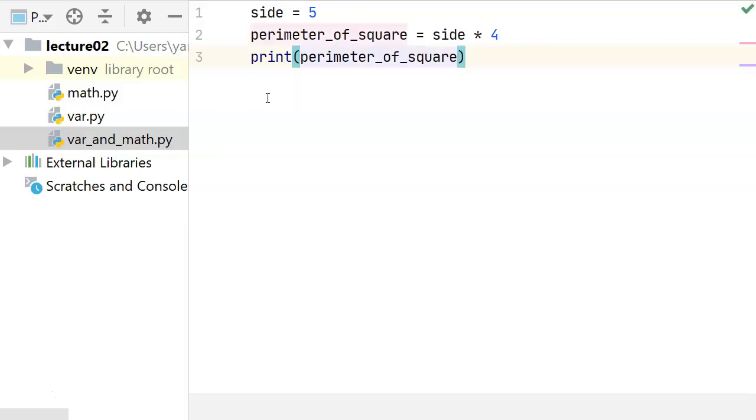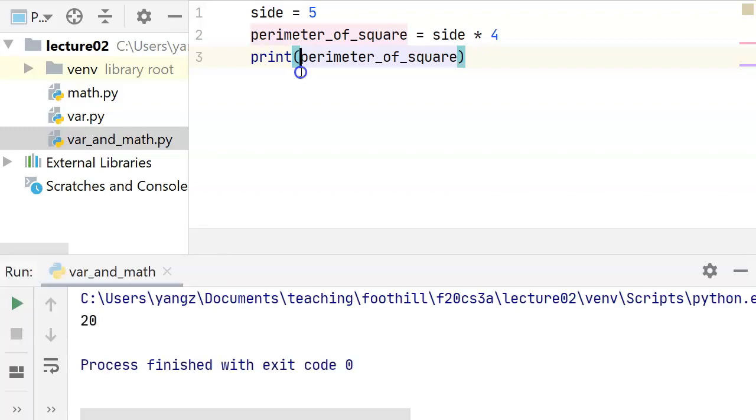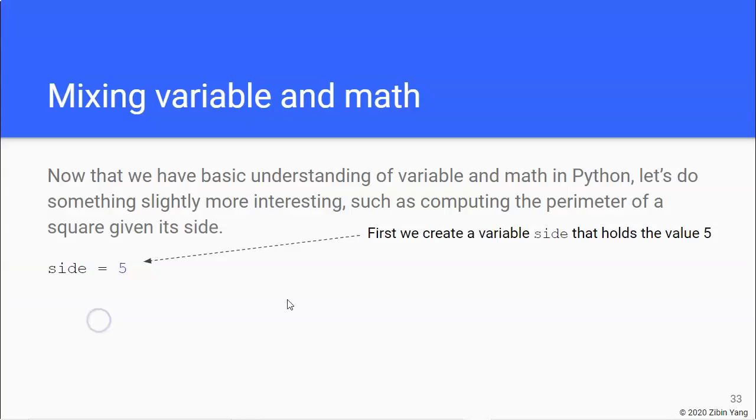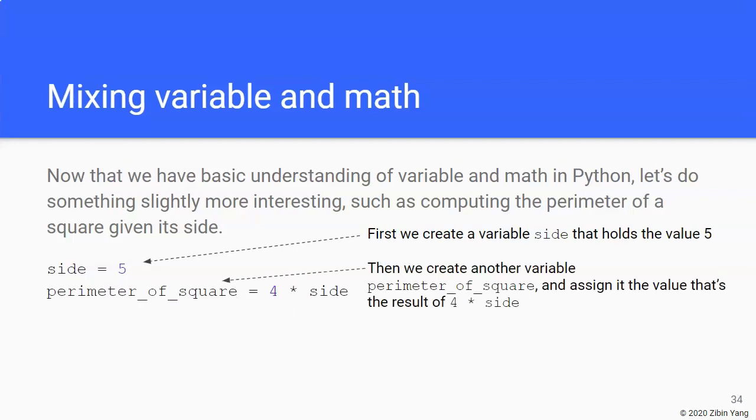And then finally I want to see what the result is, so I'm going to print out perimeter_of_square. And if I run this, hopefully I've done everything right, then we are going to see the result of 20, which is what we expected.